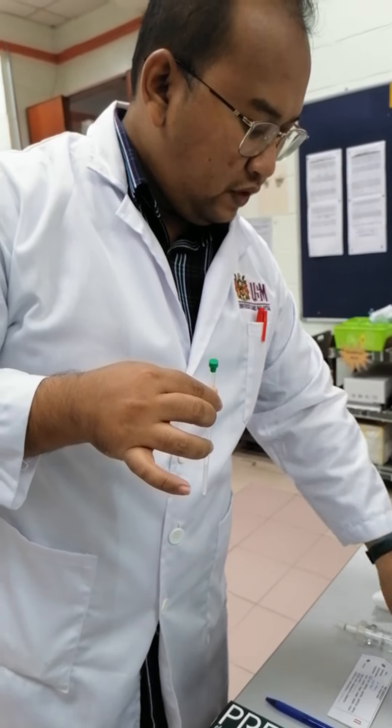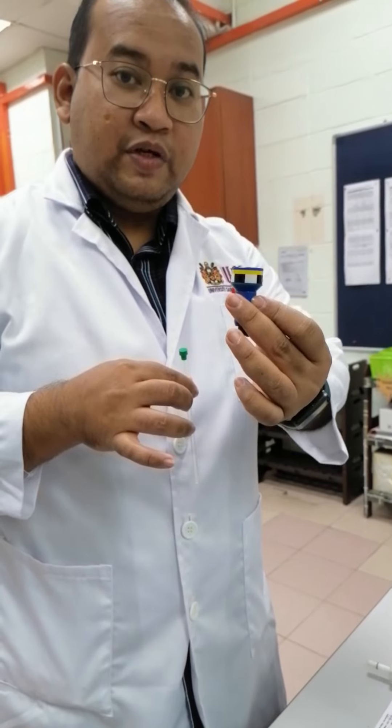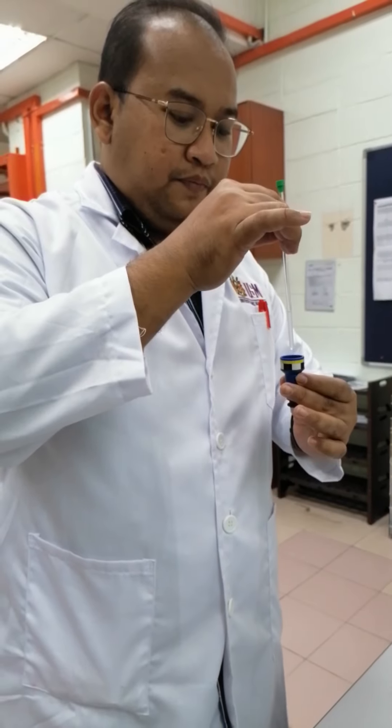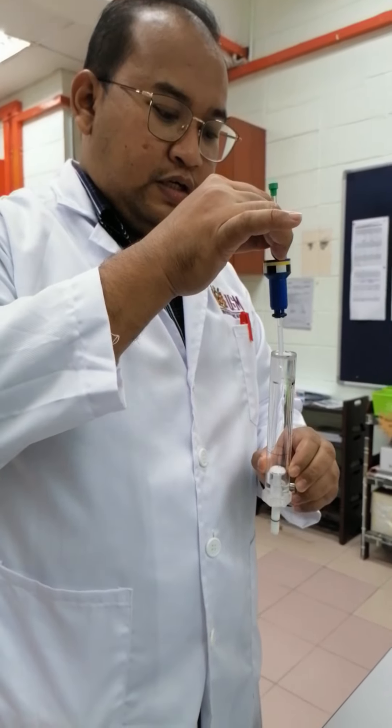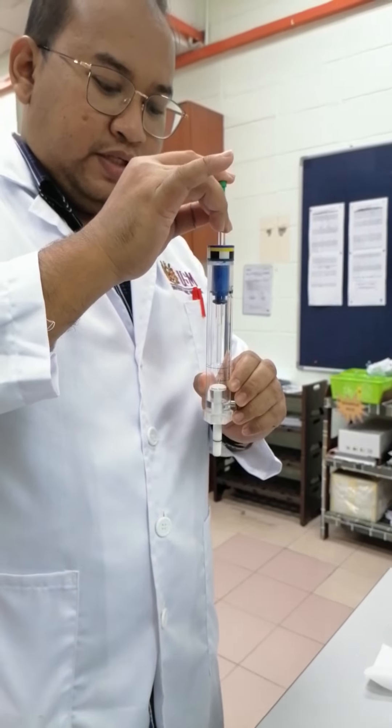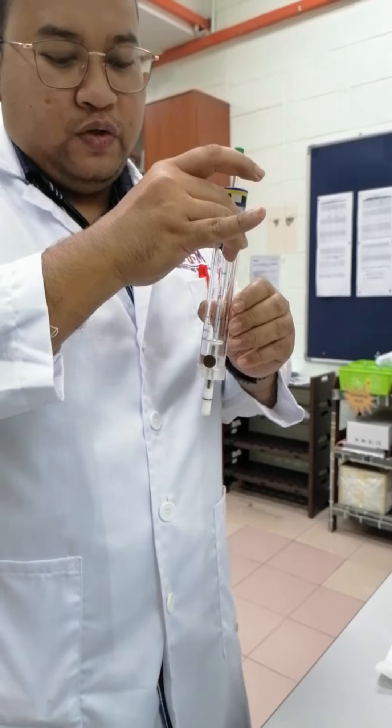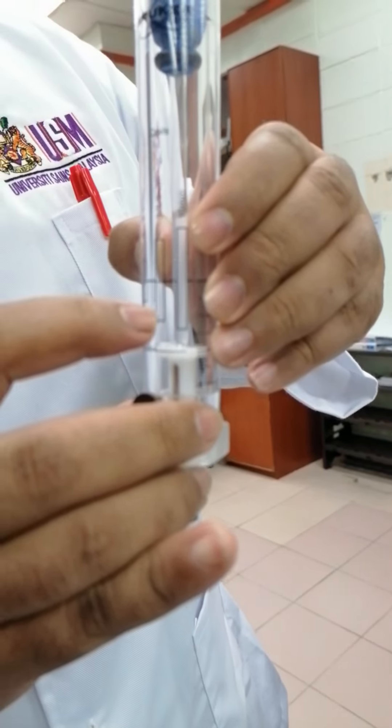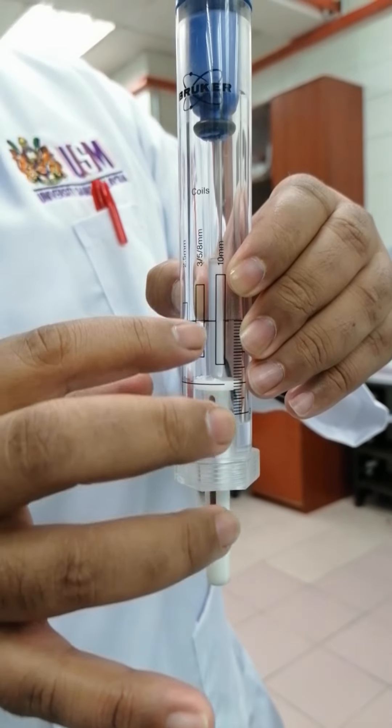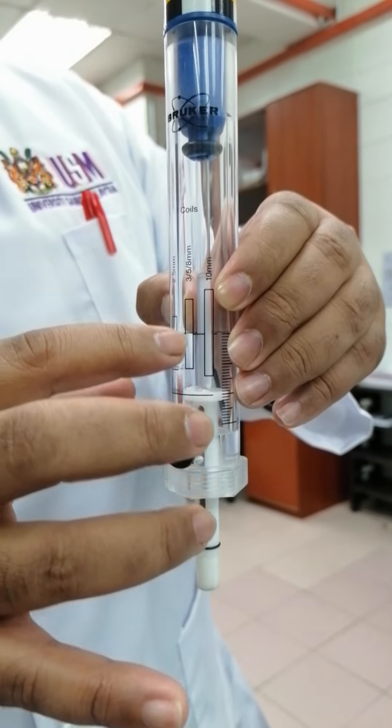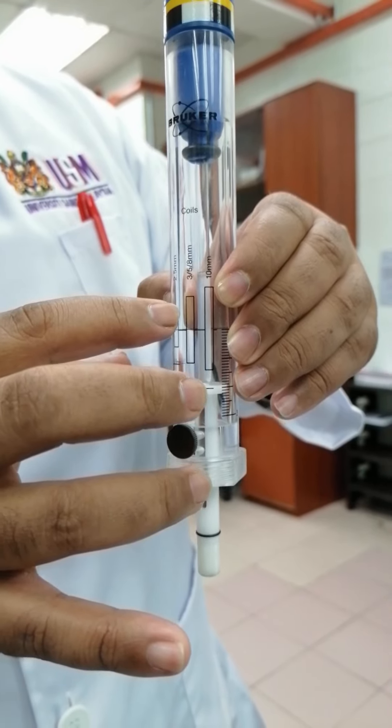And after that, we put inside the spinner. This is the spinner. And we have to use leveler to make sure we are in the product and make sure we have this length of solvents. And this is magnetic field that they will measure for our samples.